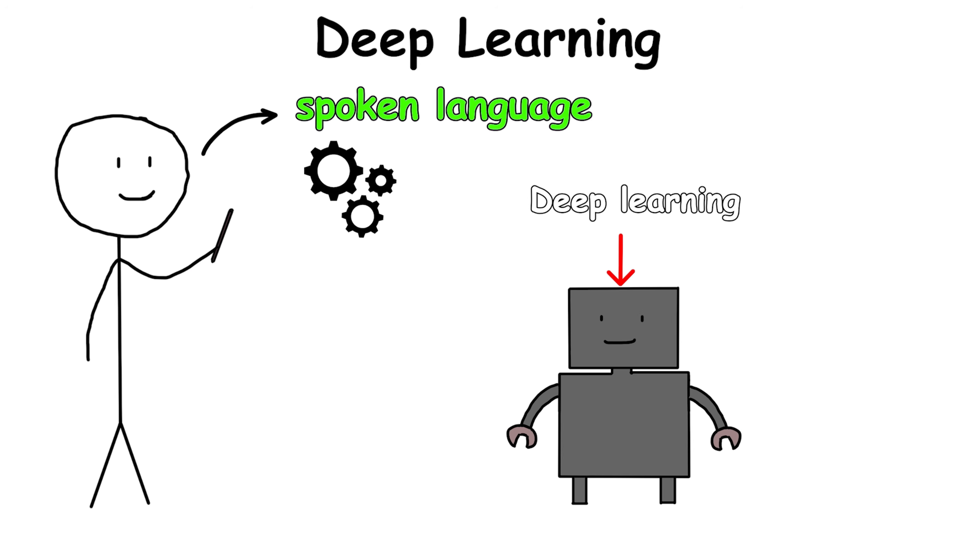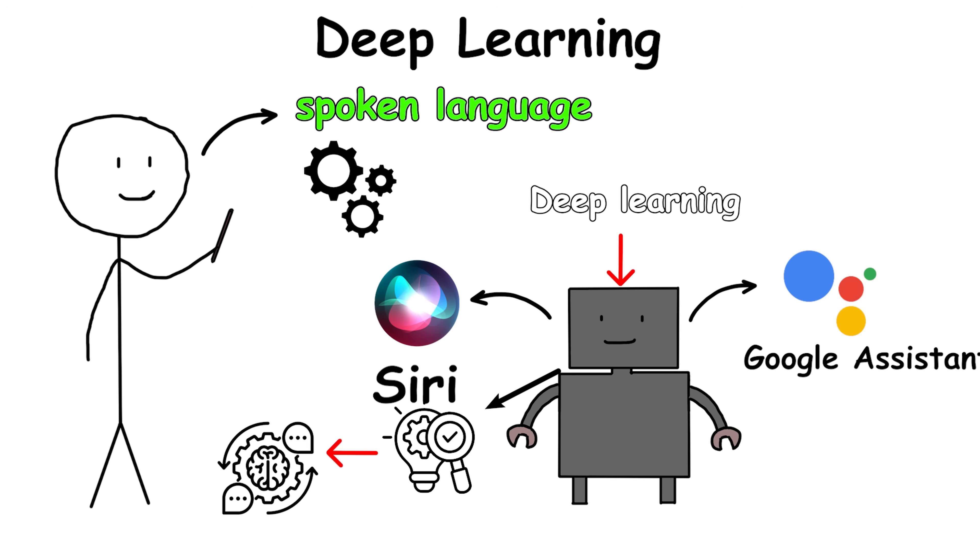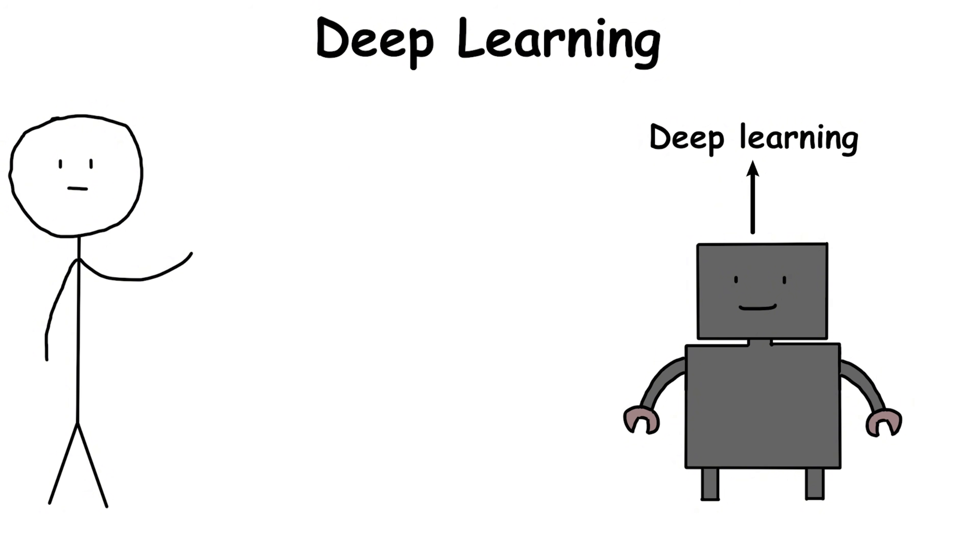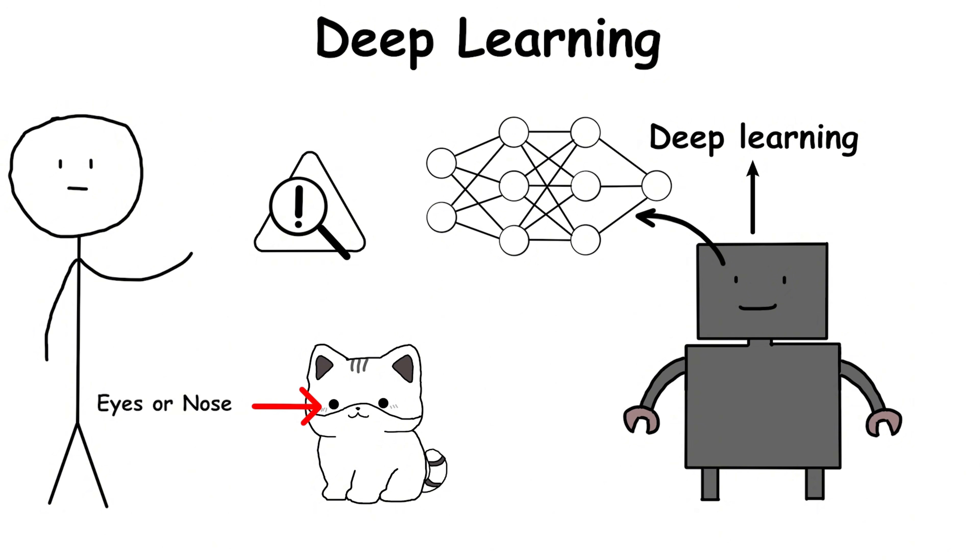In speech, it enables virtual assistants like Siri or Google Assistant to understand and respond in natural language, even with accents or background noise. Unlike traditional machine learning that needs engineers to craft feature sets manually, Deep Learning automatically discovers features across layers, detecting edges, shapes, and abstract concepts without explicit instructions.